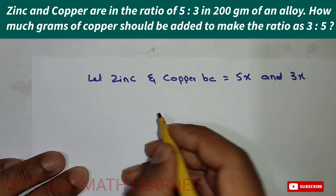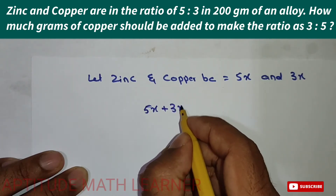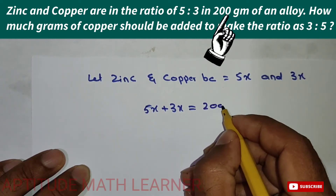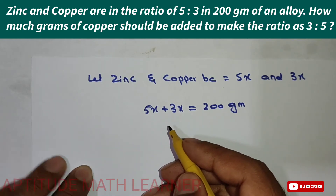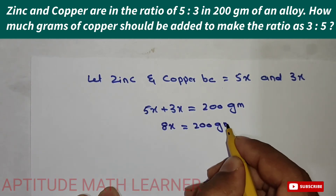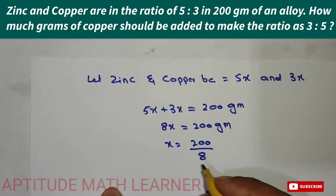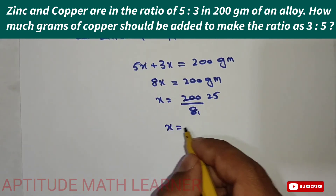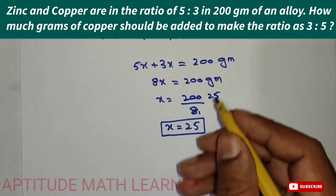Now we find the quantity of zinc and copper in the present ratio. So 5x + 3x equals the total, which is 200 grams. This gives us 8x = 200 grams, and therefore x = 200 divided by 8, which equals 25.